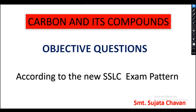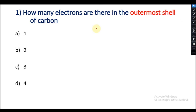Welcome to Fun with Science. As you know, the exam pattern for 2021 has changed — it is now changed into objective type questions. 40 marks objective type questions will be asked in the science exam. So today I am going to discuss the important objective type questions from the lesson Carbon and its Compounds. I have selected different types of questions, so watch the video until the end. Let us see the first question.